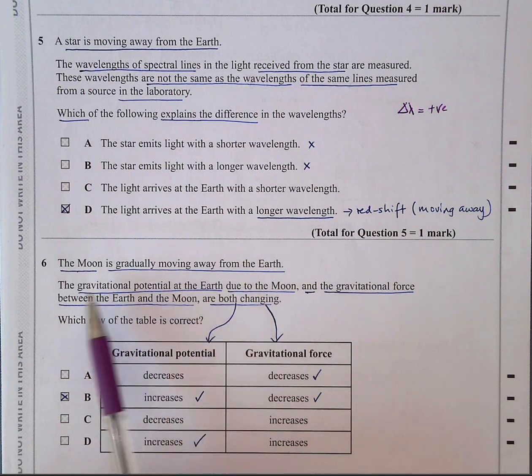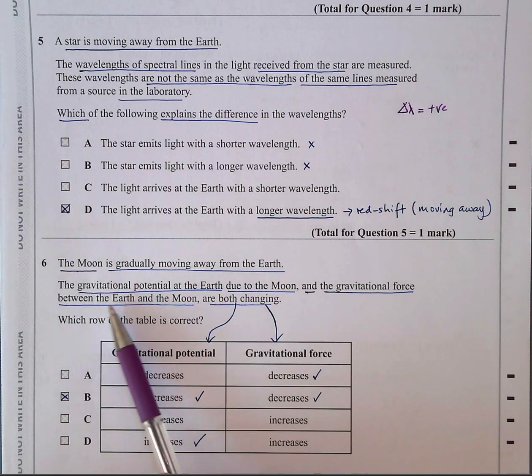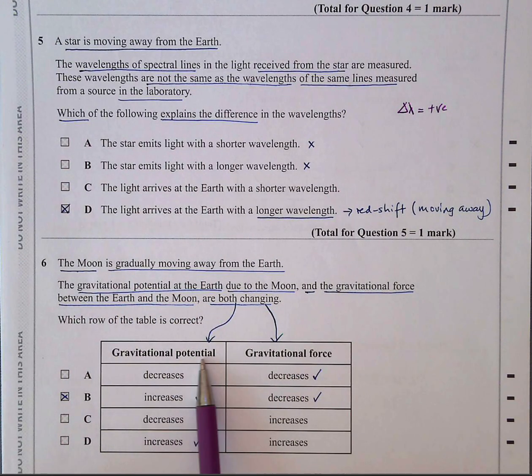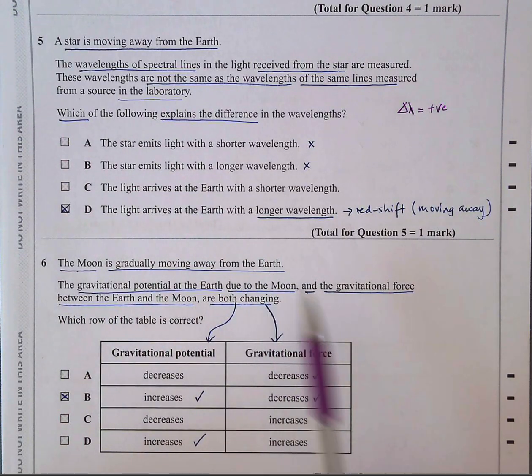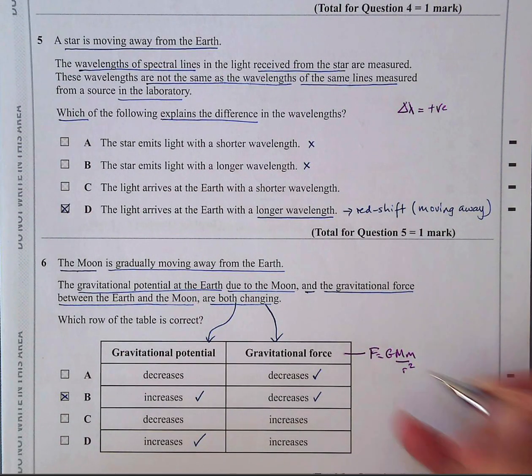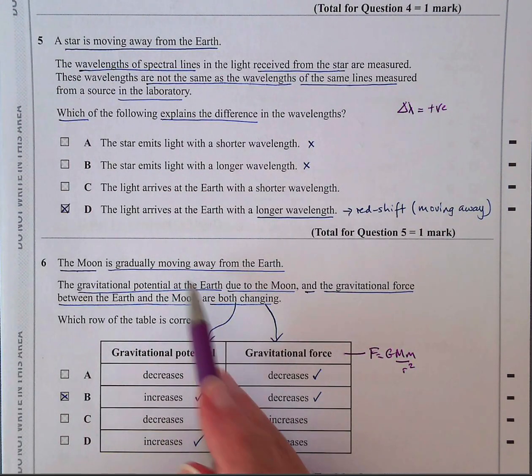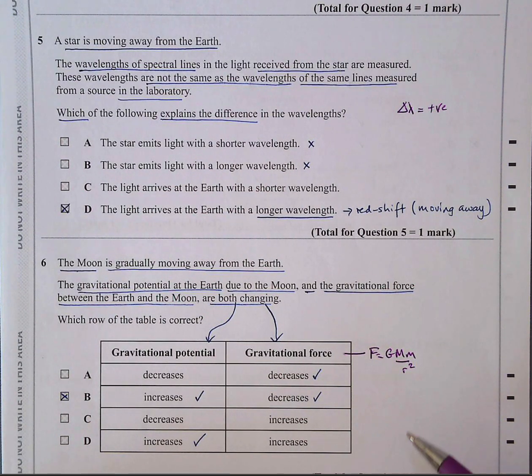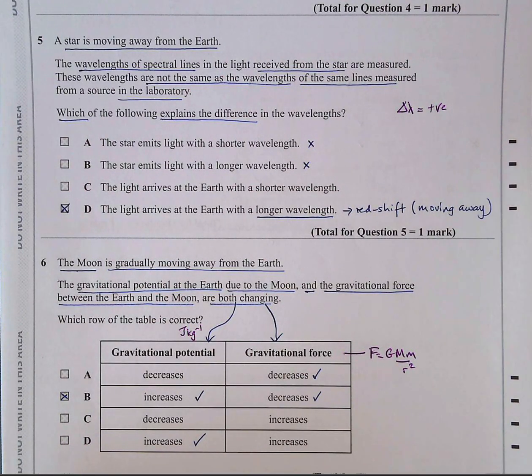The Moon is gradually moving away from the Earth. The gravitational potential of the Earth due to the Moon, and the gravitational force between the Earth and the Moon are both changing. So one column is gravitational potential. So it's a bit like potential energy. It's potential energy per kilogram if you want it simplified. So it's joules per kilogram and this is Newton's. So the Moon is moving away. So if it's moving away, the gravitational force will get weaker because gravitational force is equal to GMM over R squared. So if it's moving away, the force will be weaker. So this should be decreases. So it has to be A or B. And the gravitational potential, if it's moving away, the potential energy, if you like, if you're moving away from the Earth, you're getting more potential energy or more potential per kilogram. So obviously it will want to go back down to Earth, so it's got more potential energy. So the answer is B.